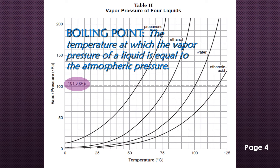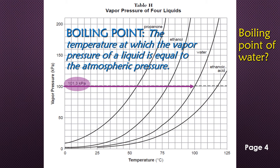Assuming atmospheric pressure equals standard pressure gives us the normal boiling point. For example, if asked for the boiling point of water with no atmospheric pressure given, we go to 101.3 kilopascals on the y-axis, draw across to the water curve, then drop down to the x-axis. That temperature is 100 degrees Celsius — the boiling point of water at standard pressure.